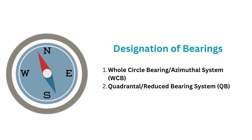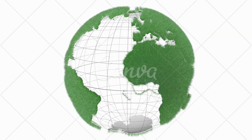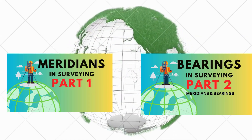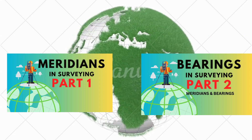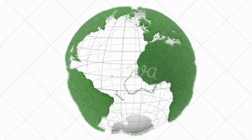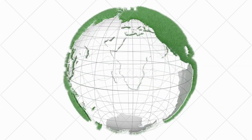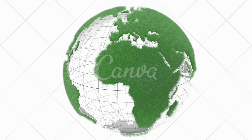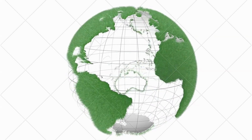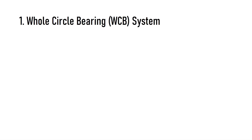Bearings in surveying can be designated by two methods: the Whole Circle Bearing system (WCB) or azimuthal system, and the Quadrantal Bearing system (QB) or reduced bearing system. Before proceeding, it is important to have a clear understanding of the terms meridians, true north, and magnetic north. We recommend watching our previous videos on magnetic meridians and bearings to fully grasp the concepts discussed in this video.